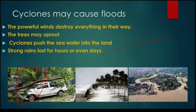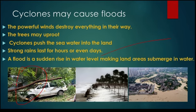All of these lead to a flood. A flood is a sudden rise in water level making a land area submerged in water. As you can see in the picture, a land completely covered with water — that is what submerged in water means.